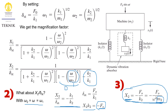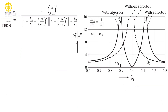Let us now look at the graph of the magnification factor for x1. In the dotted line we have the original graph without the absorber — the y-axis is the magnification factor X1 over static deflection, and the x-axis is the frequency ratio. This is just like the case of undamped vibration, having a single peak at a frequency ratio of one. Now with the absorber added to the system, we shift to the solid lines showing two different peaks corresponding to two different resonant frequencies.